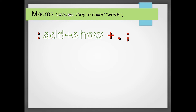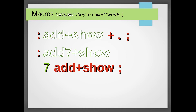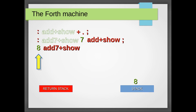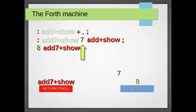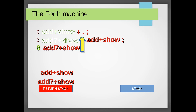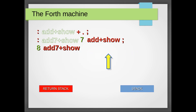So how does that work? Let's make another word: add-seven-plus-show. Let's define that as colon, add-seven-plus-show, seven, add-plus-show, semicolon. Now we issue the command: eight, add-seven-plus-show. So what happens? We throw eight on the normal stack. We throw our current location on the return stack and jump to add-seven-plus-show. That throws seven on the stack. We throw our current location on the return stack and jump to add-plus-show. Plus is a command — it takes eight and seven from the normal stack, adds them and places 15 on the normal stack. Dot is a command — it takes 15 from the stack and displays it. Return takes our previous location from the stack and jumps back. Return takes our previous location from the stack and jumps back. And we're right back where we started.